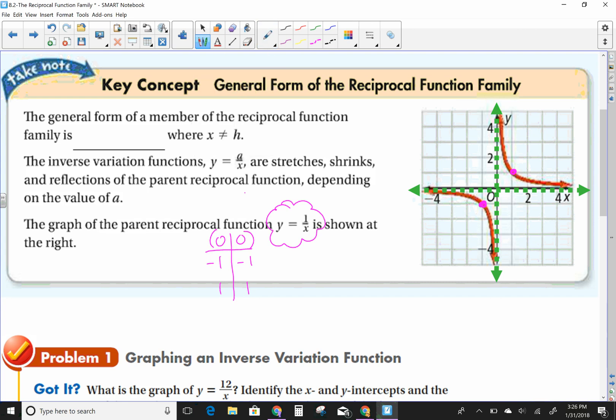So what you need to know about these, the key information is that your domain is all real numbers except x not equal to 0. And your range, you can write it with a little cursive R or you can write two little lines like that with the R. The range is all real numbers except for y is not equal to 0. And as I said, you will always have these asymptotes. Asymptotes, remember the lines that the curve approaches but never touches. And we will have x equals 0 and we will have y equals 0.